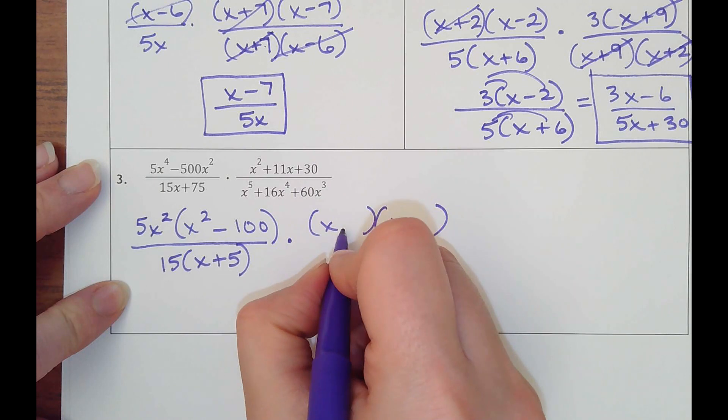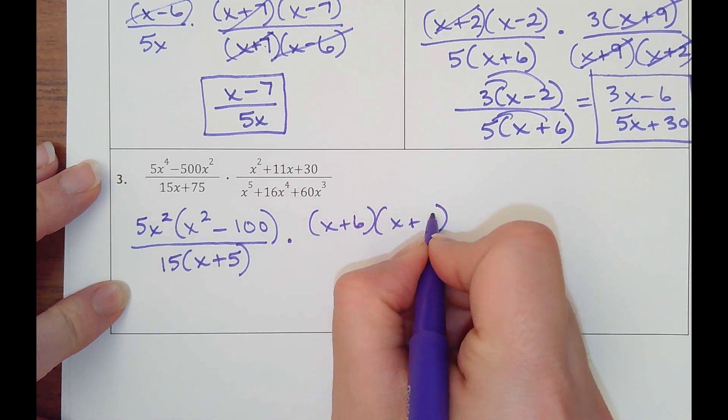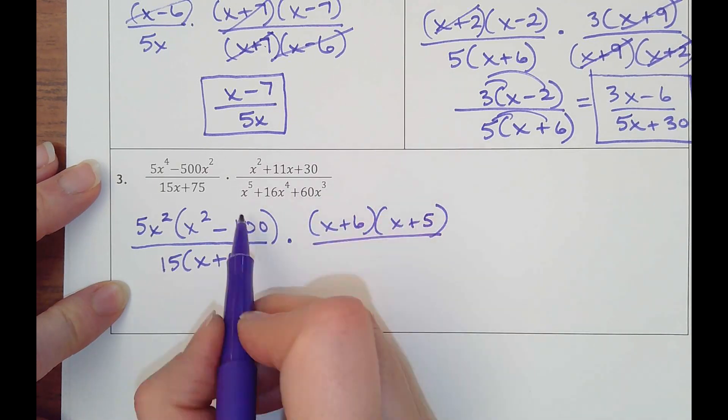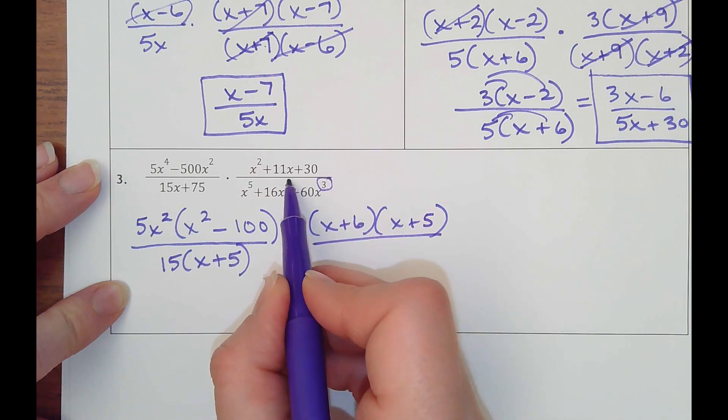Multiplies to make 30, that adds to make 11 would be 6 and 5. And then on the denominator, notice how they all have x's.